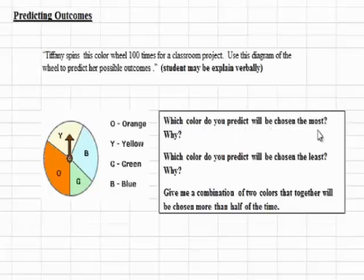The first question says, which color do you predict will be chosen the most and why? What we have to do is look at the chart and see which color has the biggest piece. We can see that orange has the biggest piece.